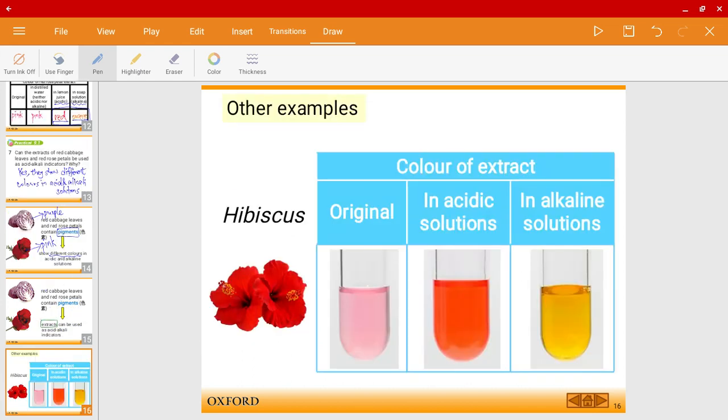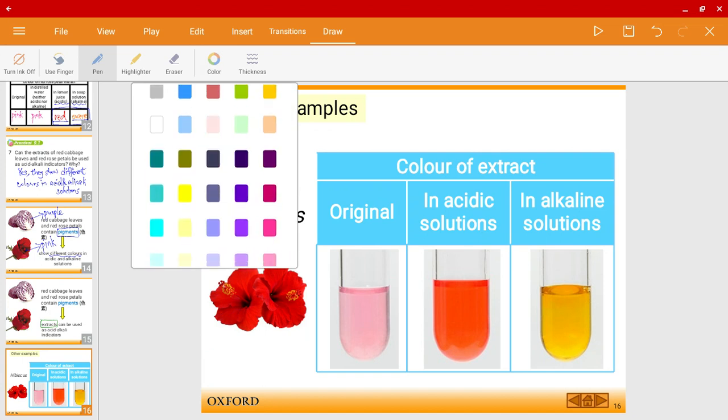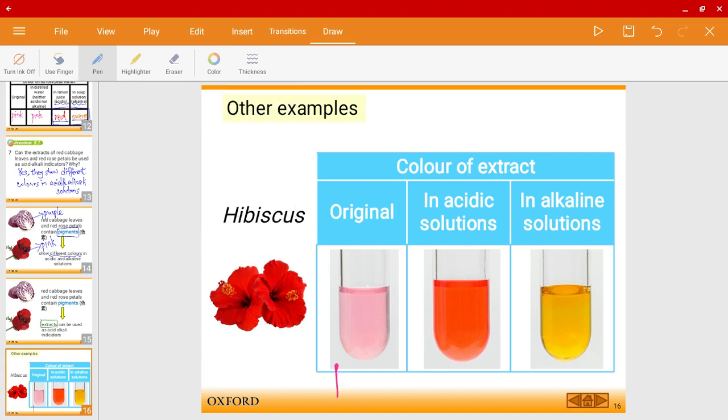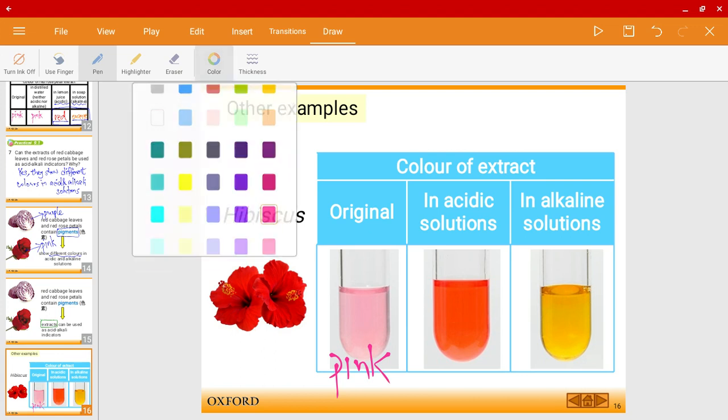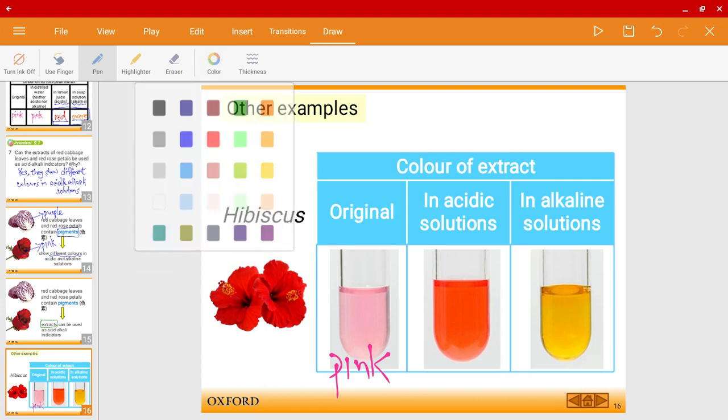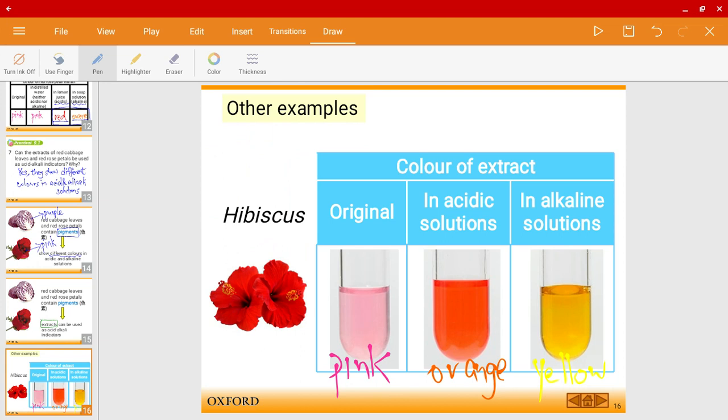So another example is a hibiscus plant. So the original color over here is pink. Let me go ahead and write that down. Pink. And in acidic solutions, it turns into orange color. While in alkaline solution, it turns yellow in color. You can't really see, but you can see from the diagram.